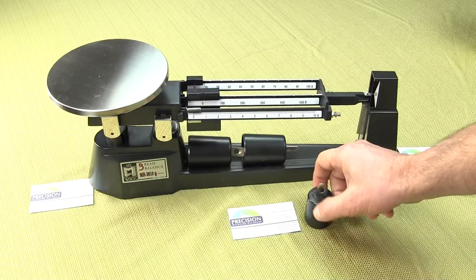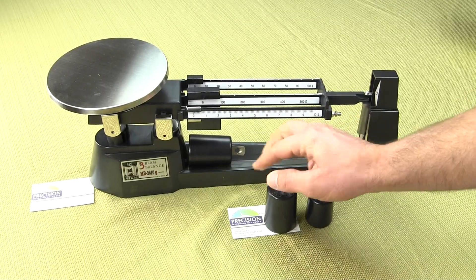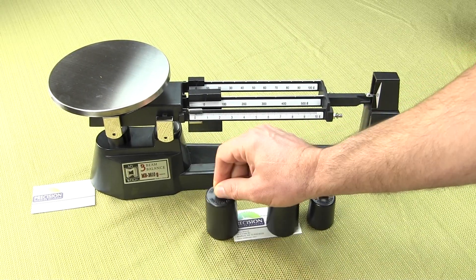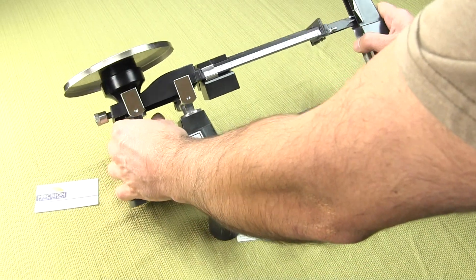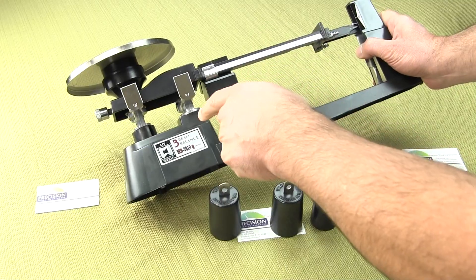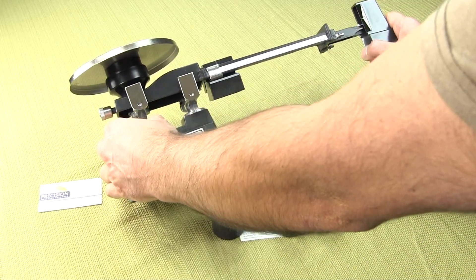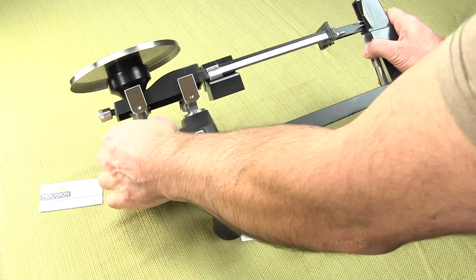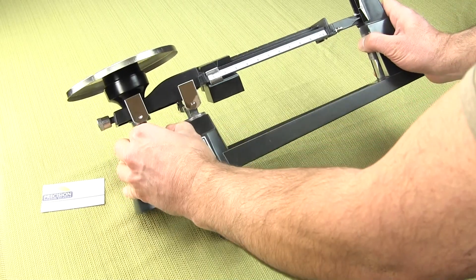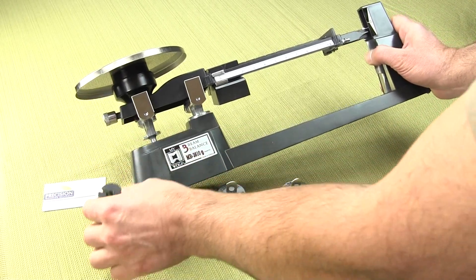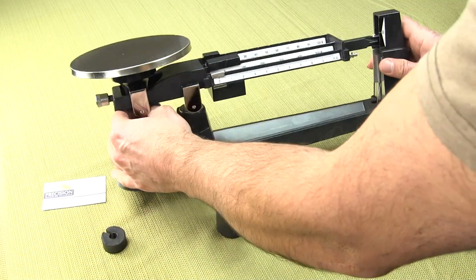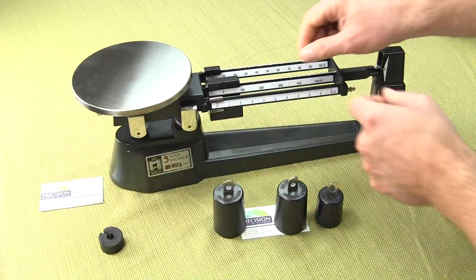When the triple beam balance comes to you delivered, there is a rubber grommet that needs to be removed before using the balance. So underneath the weighing platform, there's this rubber grommet right here. We're going to remove it. This just comes out. This is for packing only so the balance doesn't toggle up and down during transit.